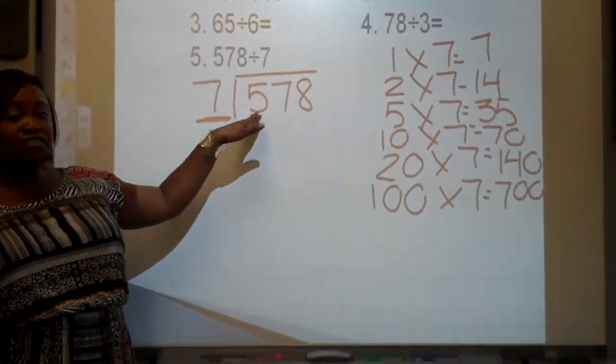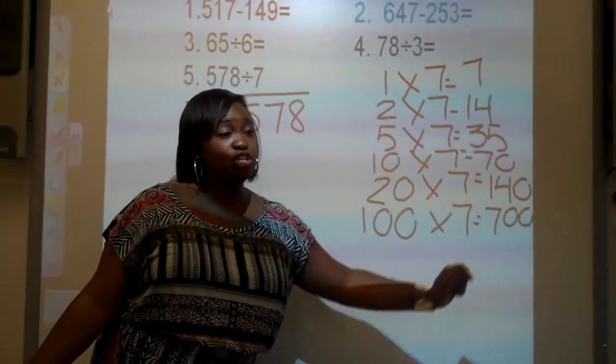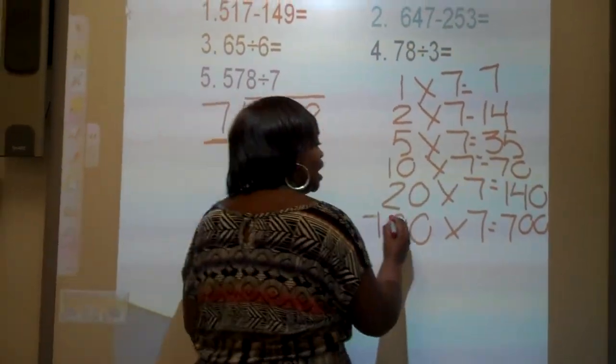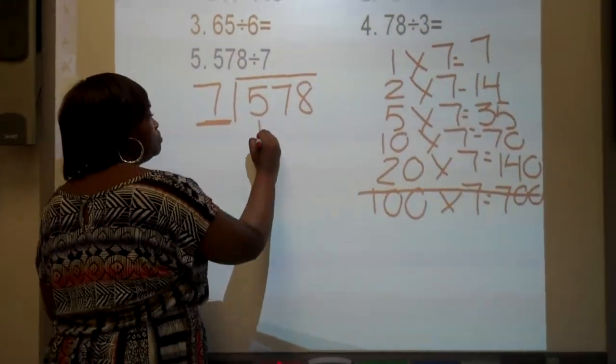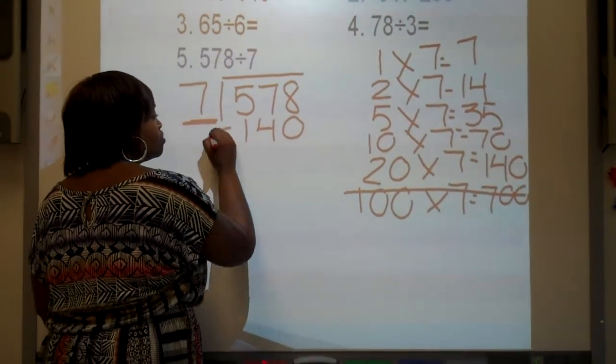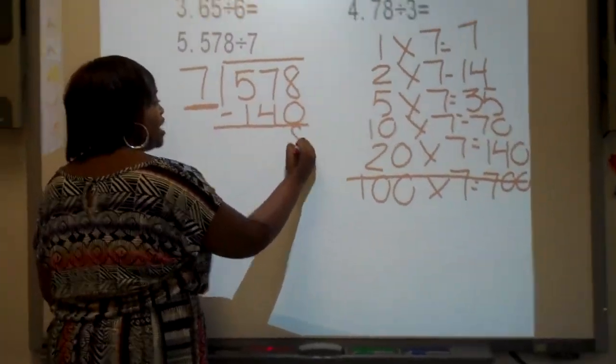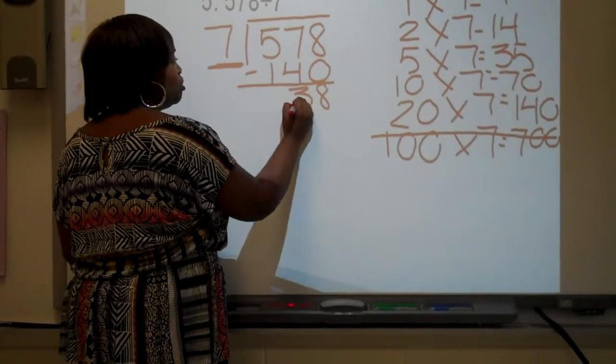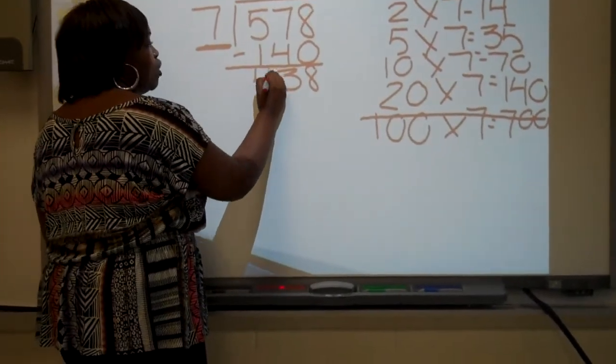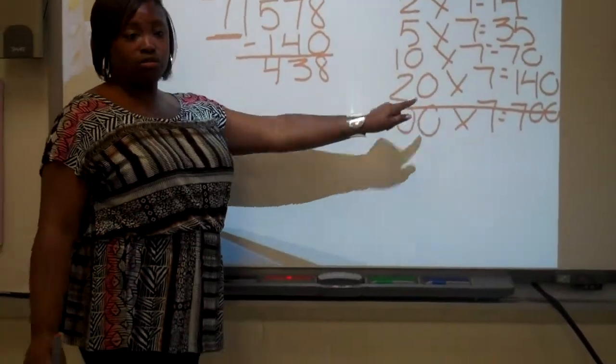Alright, if I have 578, can I take 700 away? No! No, I cannot. Can I take 140 away? Yes! 8 minus 0 is 8, 7 minus 4 is 3, 5 minus 1 is 4. Which trick did I use? 20!